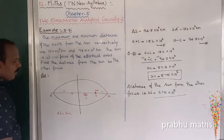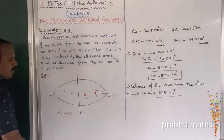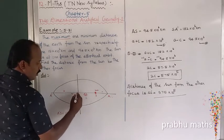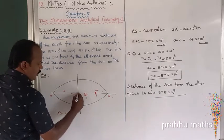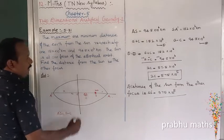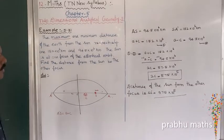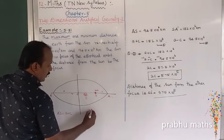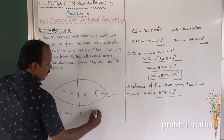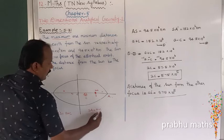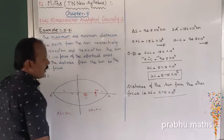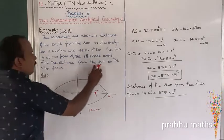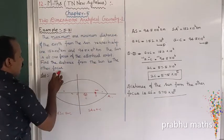The minimum distance is SA, which equals a minus c. So the minimum distance SA = a − c.